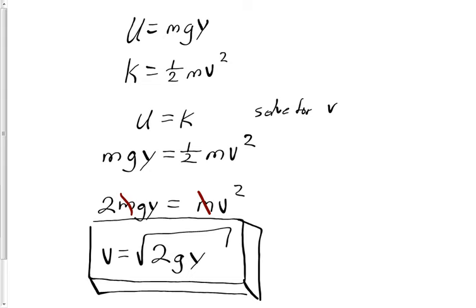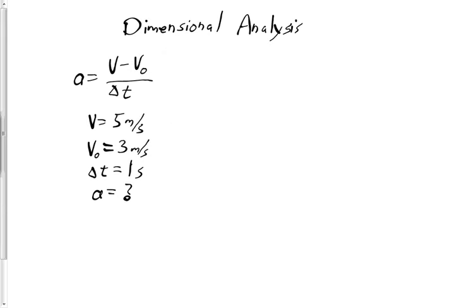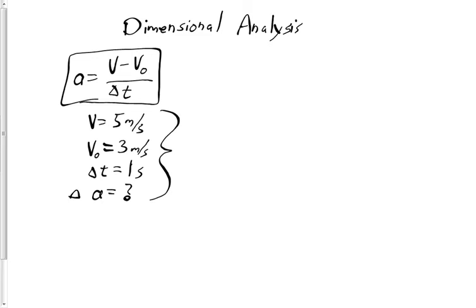This equation only works in the particular scenario where U equals K — it doesn't apply in all cases. We'll get to the greater meaning of all the variables later, but this is a perfect example of what we'll need to do. Now I'd like to go over dimensional analysis. I have an equation with variables and given values, plus one unknown. It's not so much the number I'm worried about — it's keeping track of the units. That's what dimensional analysis is: keeping track of the dimensions, the units.